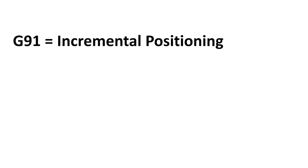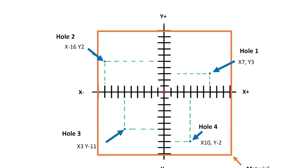Let's go to G91, the second code in the modal group — it is incremental positioning. Once again, the red dot in the center of the part is the datum or zero position. In incremental positioning, only the first feature is directly relative to the datum; each programmed position after is relative to the last position. For instance, hole number one is seven units in the positive X direction from the datum and three units in the positive Y direction from the datum. Therefore, the XY location of hole number one is X7 Y3.